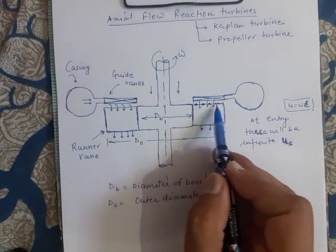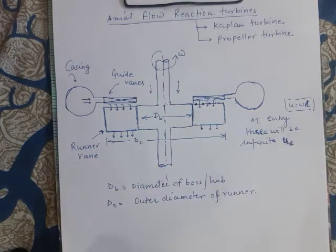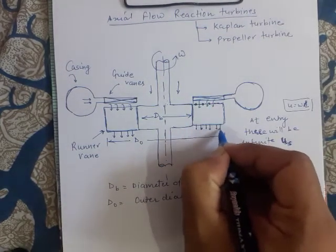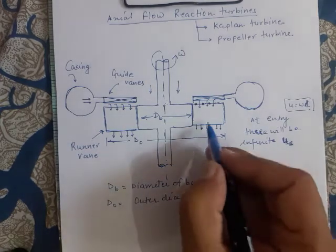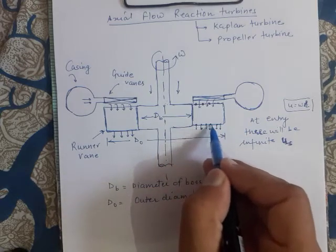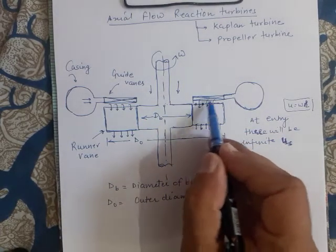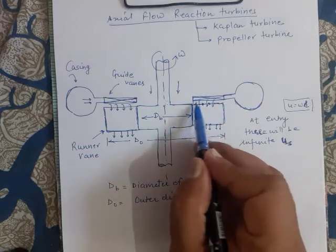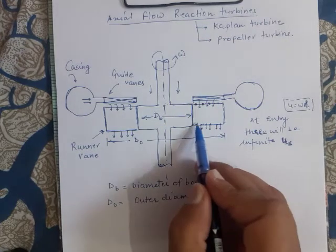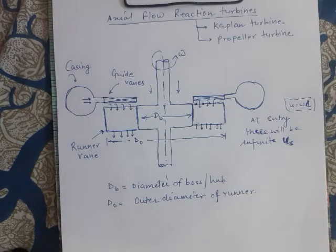Since for every point on the inlet to the runner blade r is different, u will be different. We therefore have an infinite number of u values at the entry. Similarly, at the exit, different radial locations mean different u values. So we have infinite blade speeds at both entry and exit of the blade.